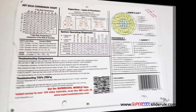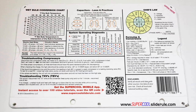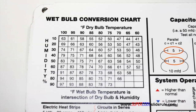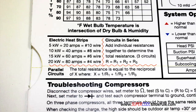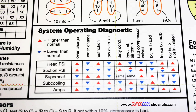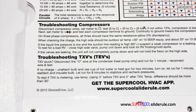The back cover contains required formulas. It has capacitor rules and practices, a wet bulb conversion chart, how to perform computations on series or parallel circuits, an electric heat strip guide, a complete system troubleshooting diagnostic chart, and how to troubleshoot compressors and TXV.